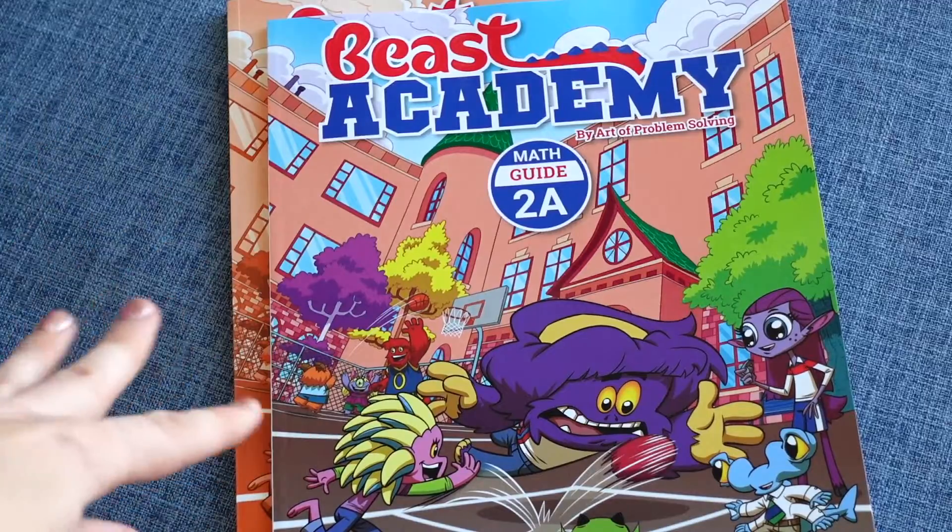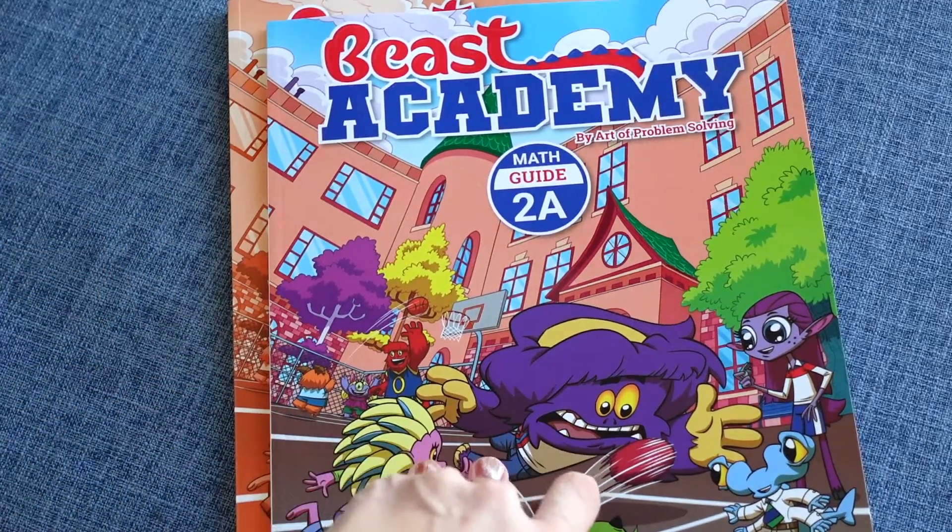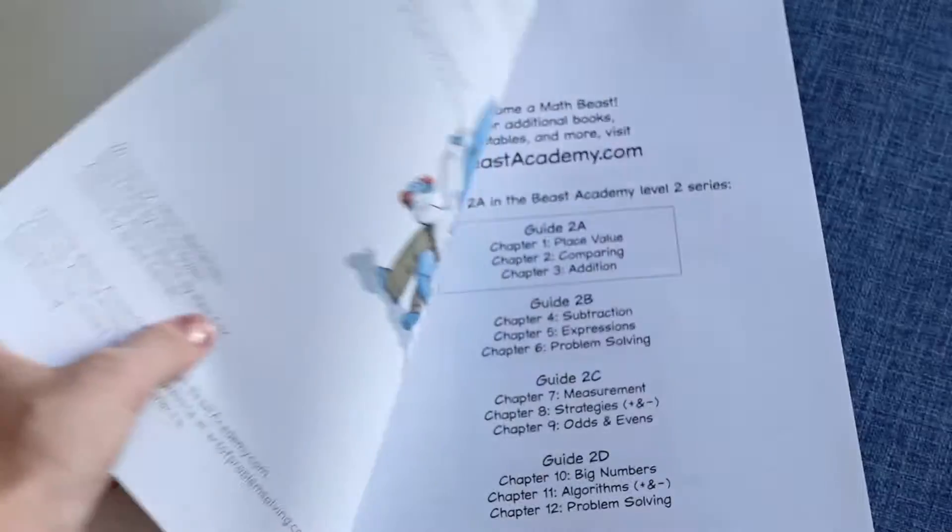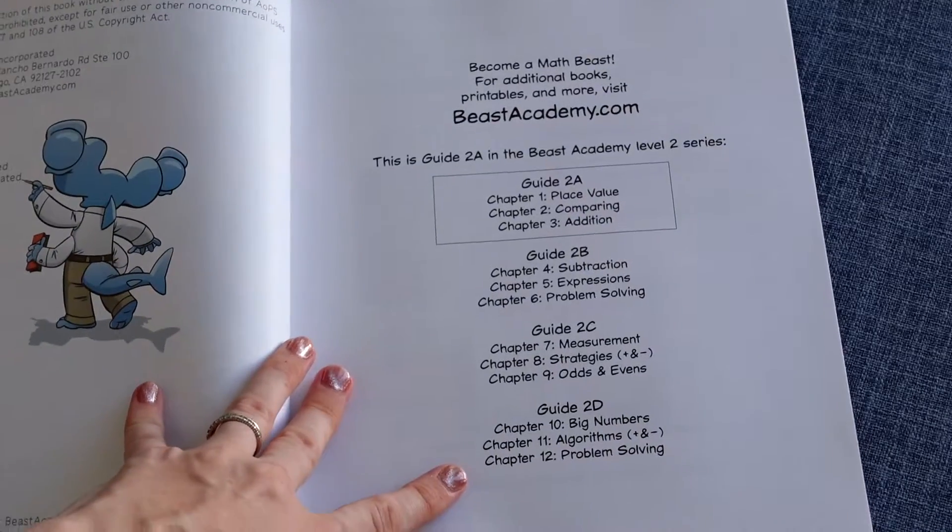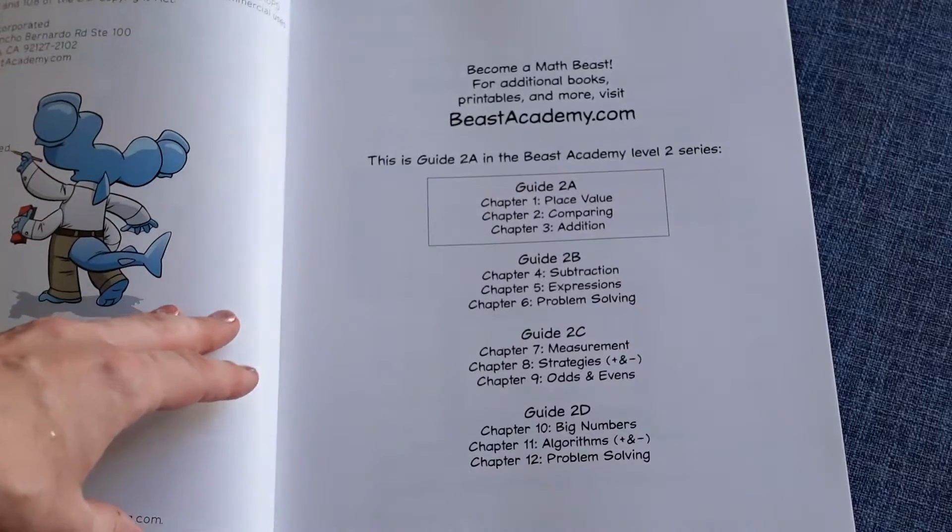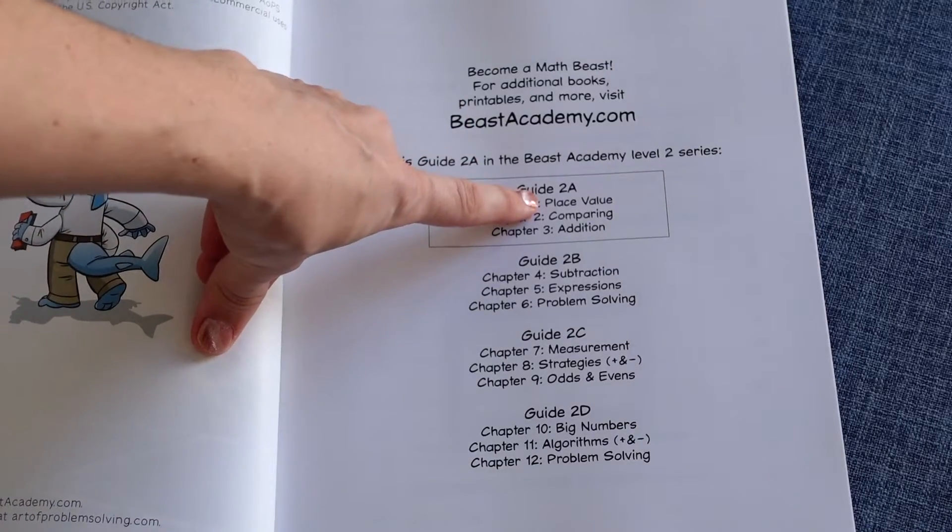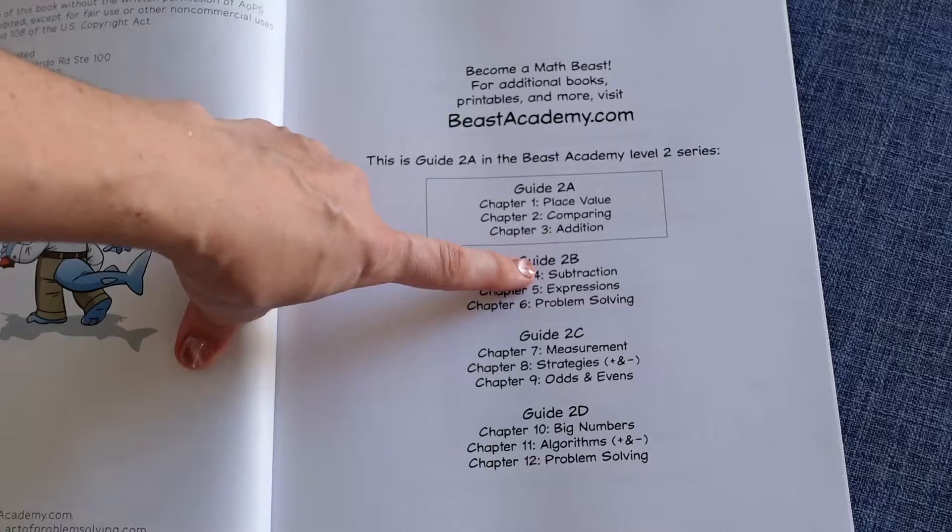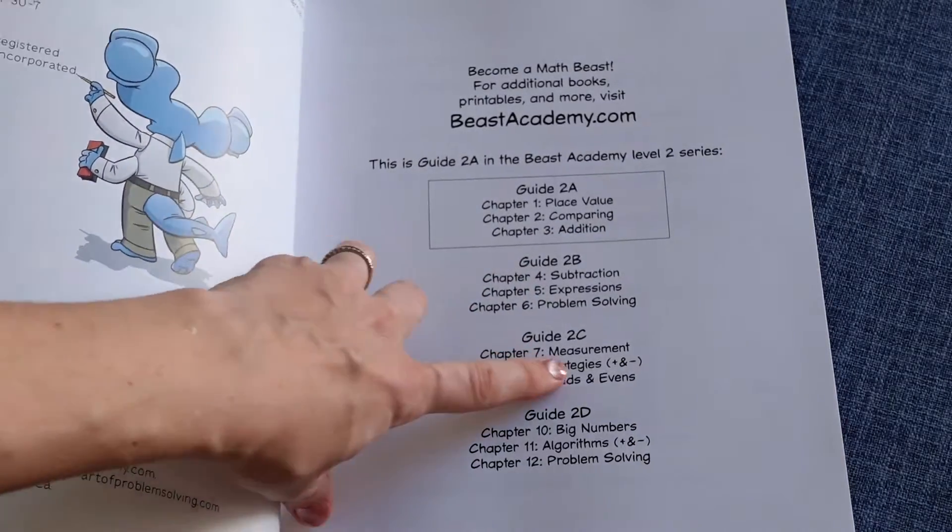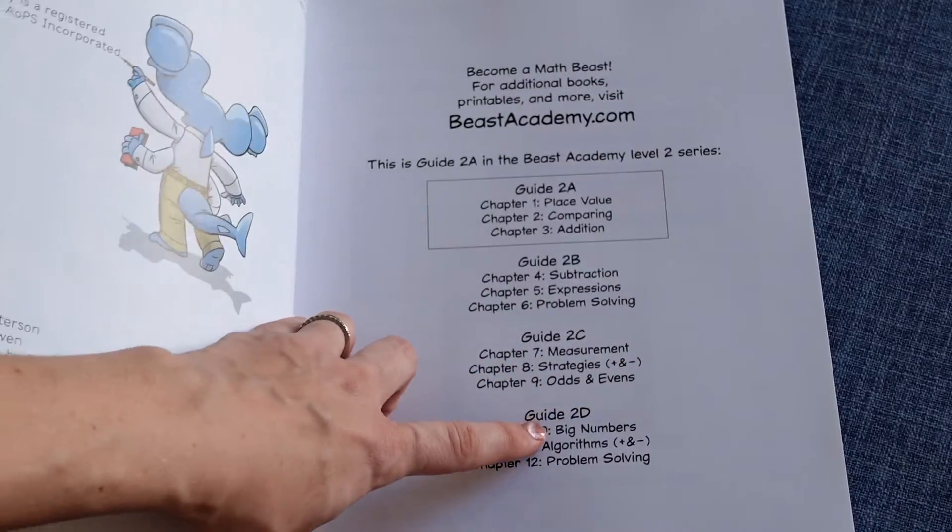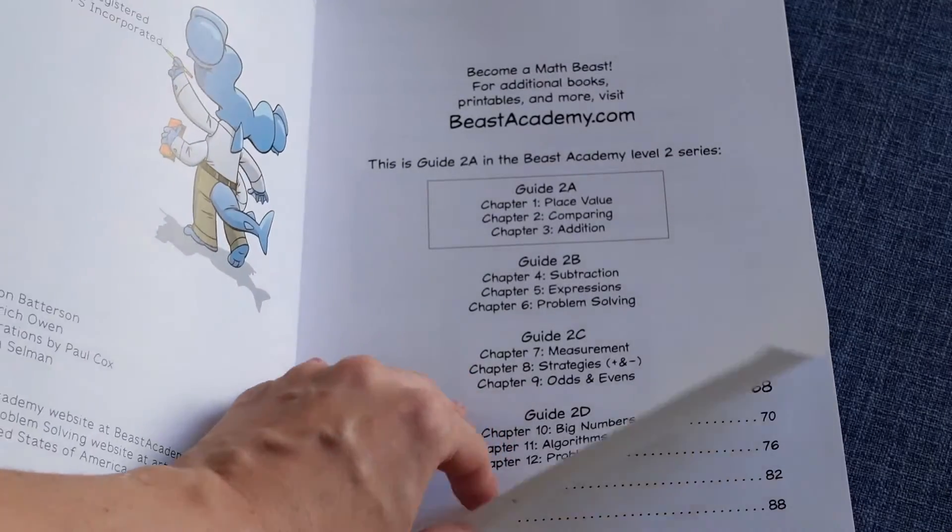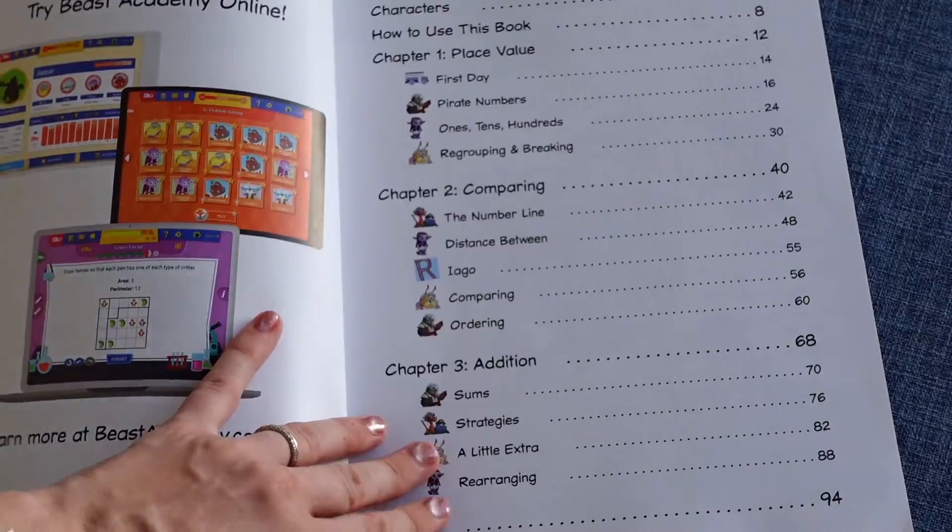I'm going to take us on a look inside the 2A guide as well as the practice book, and then I'll try to show you a little bit into the next one as well. But to start with, a glimpse at what topics are being covered in this level. So they give you right here, there's 3 chapters in each of the guidebooks. We're seeing the topics covered: place value, comparing, addition, subtraction, expressions, problem-solving, measurement, strategies for adding and subtracting, odds and evens, big numbers, algorithms, and problem-solving. So you can see kind of your basic contents right there.